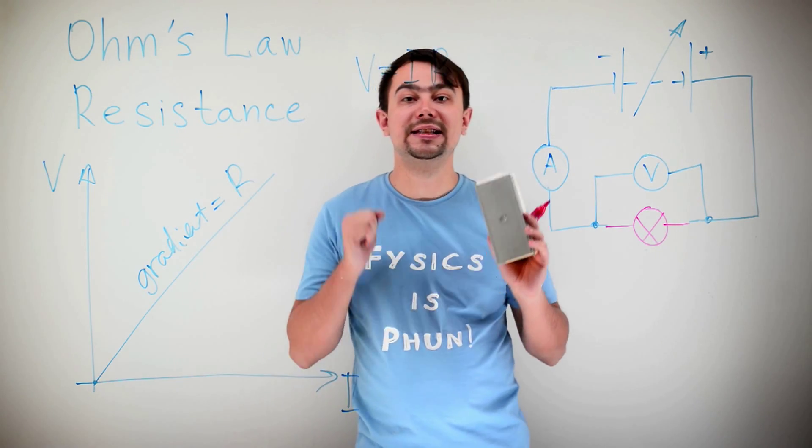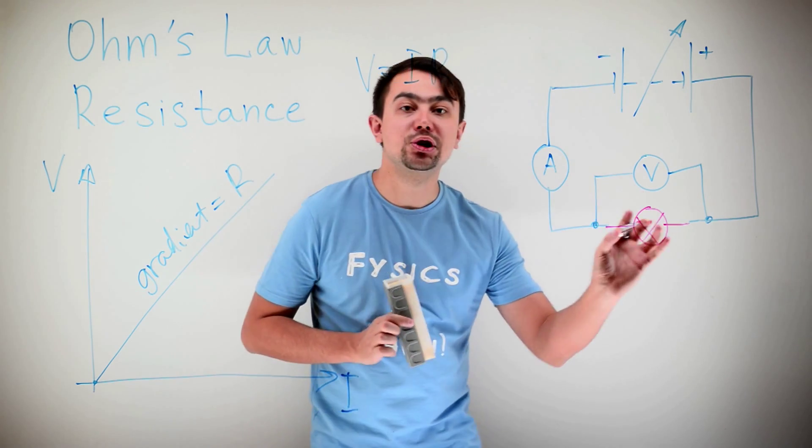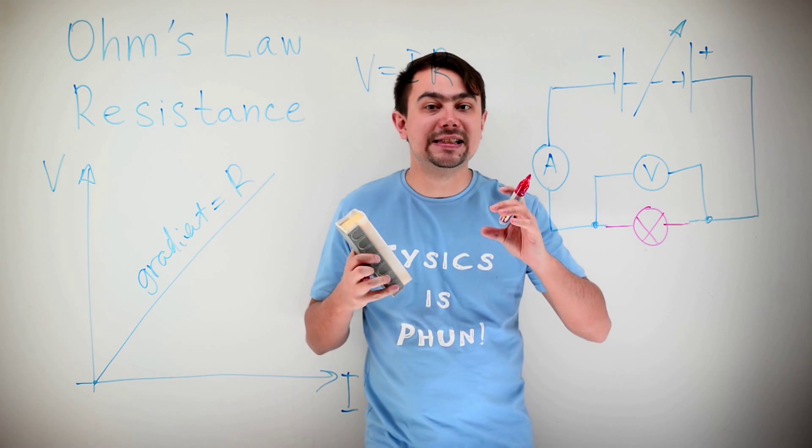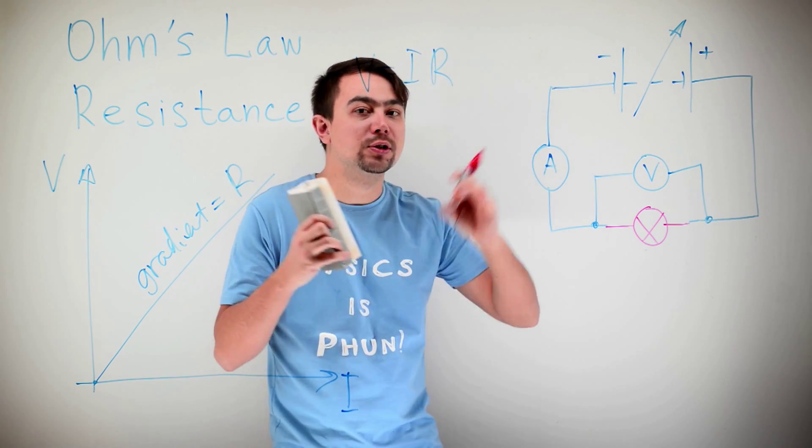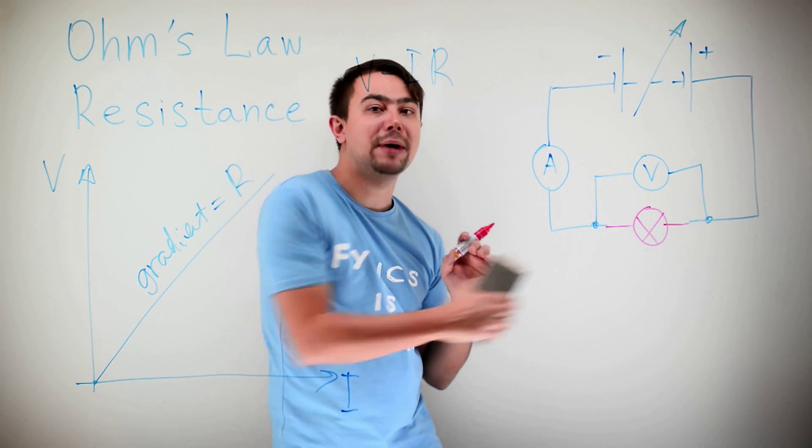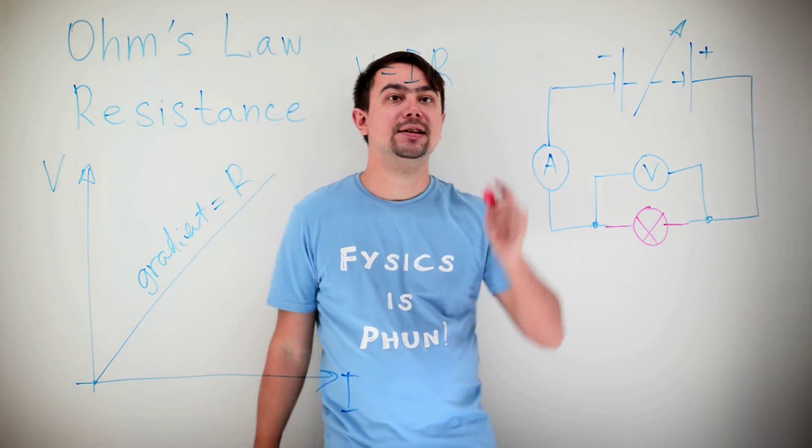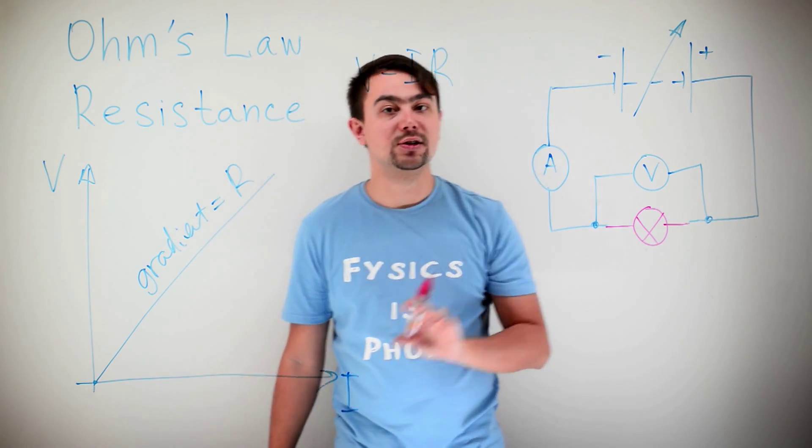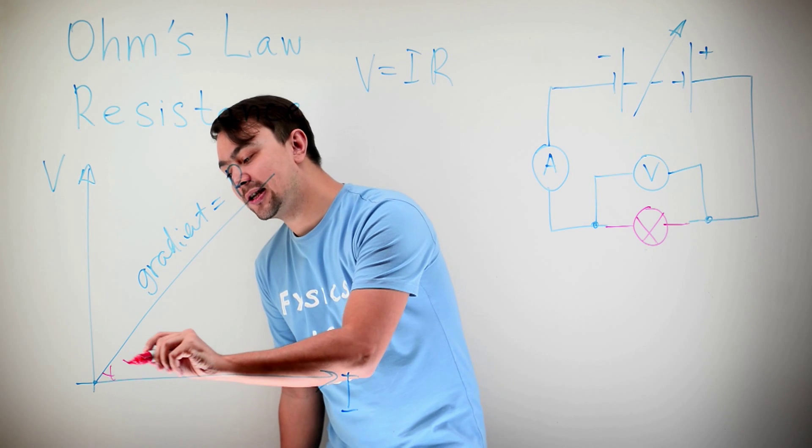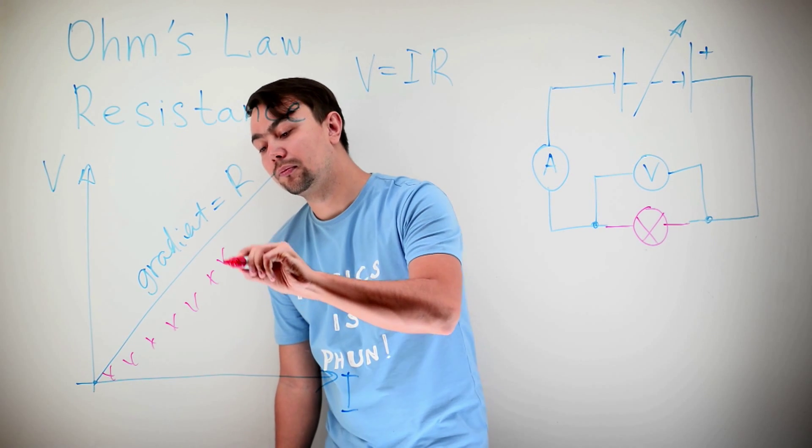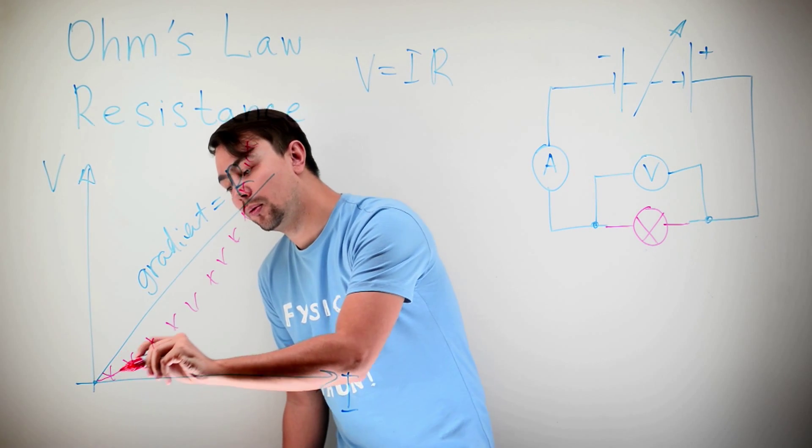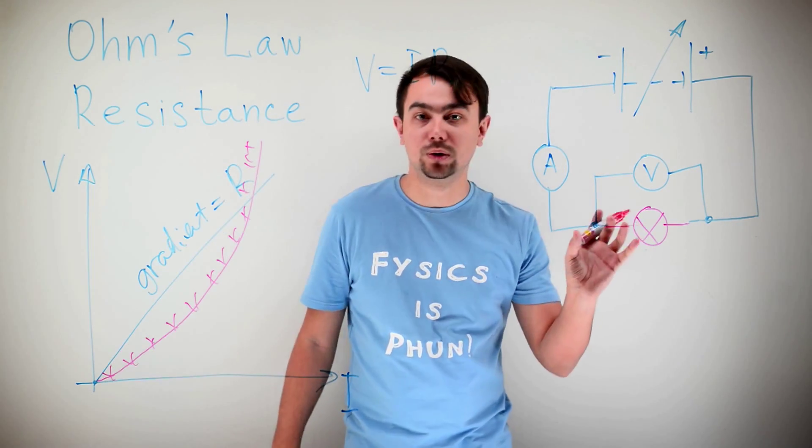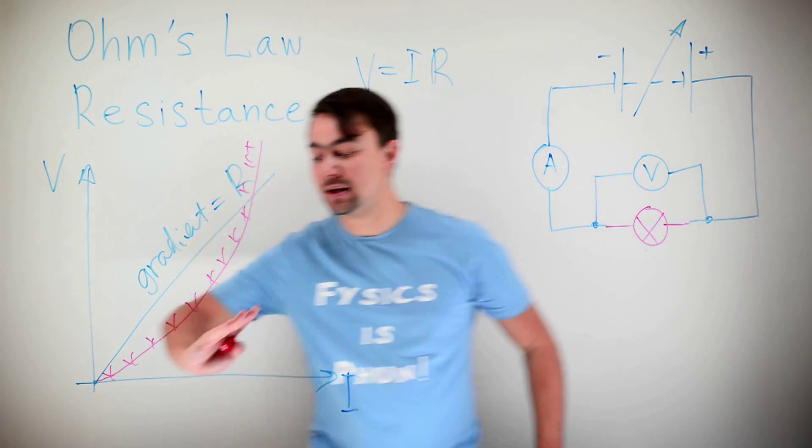As the current increases in the lamp, the temperature of the filament increases. And when the temperature of a conductor increases, the atoms start to wobble about, making it hard for the electrons to pass through. That means that the resistance increases. When the current is small, the lamp is cold and the resistance is not very big, because the resistance is the gradient.